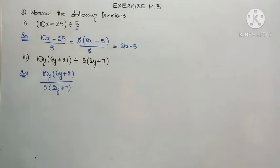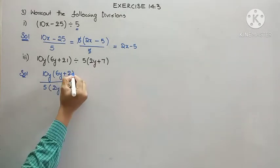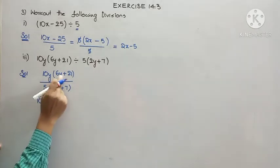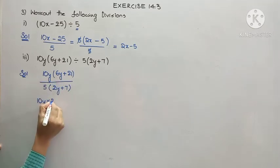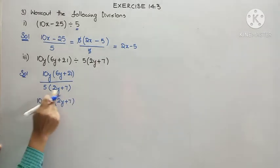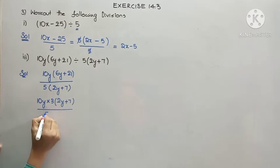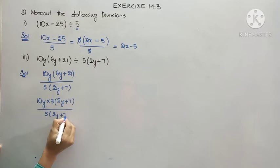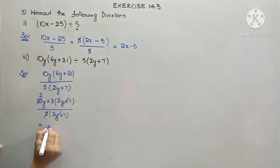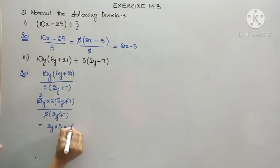Looking at the denominator — 5 times (2y + 7) — we bring out 3 as common from (6y + 21), giving 3(2y + 7) inside, because 3 times 2y is 6y and 3 times 7 is 21. So in the numerator we now have 10y times 3 times (2y + 7), divided by 5 times (2y + 7). Cancelling (2y + 7) and 5 with 10y, the leftover value is 2y times 3, which gives 6y as the required answer.